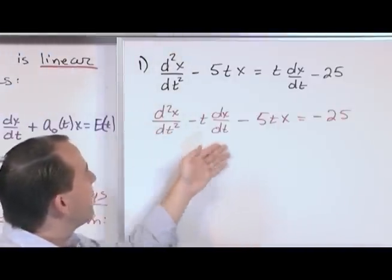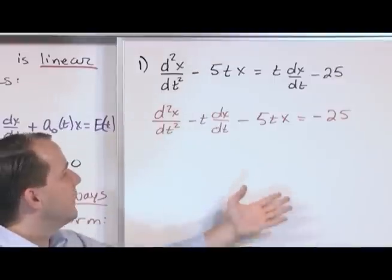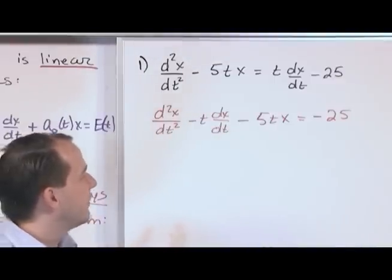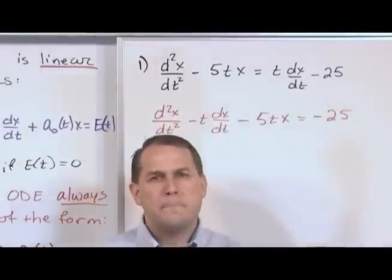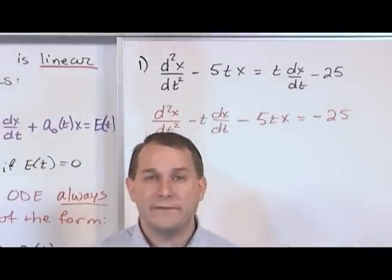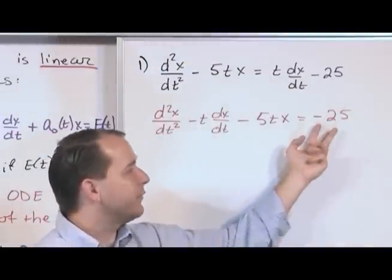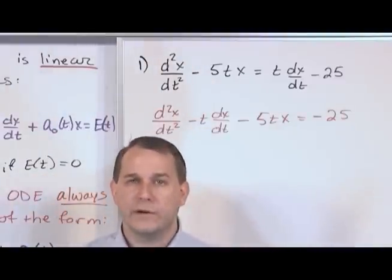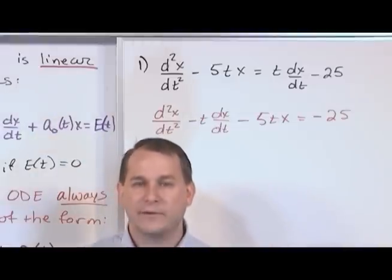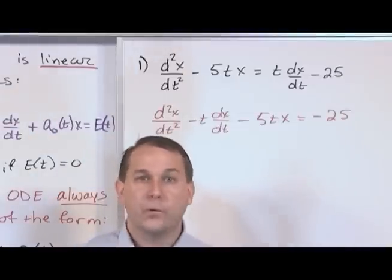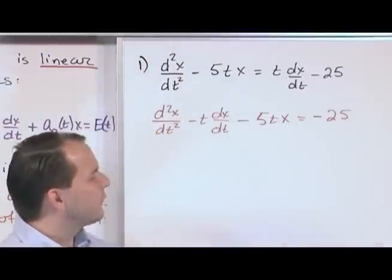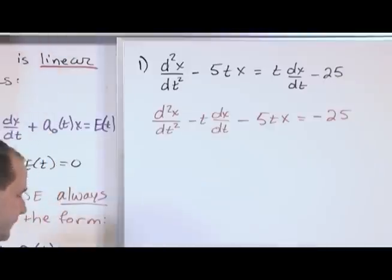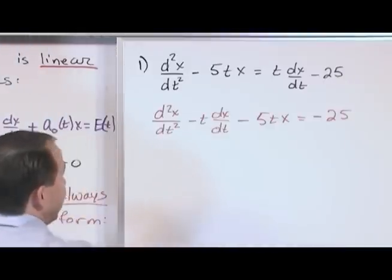So this is my forcing function. If this circuit represented, let's say, an electric circuit, if this differential equation represented an electric circuit, this e of t might be the voltage. Maybe I have a 25-volt battery hooked up backwards or something, so it's negative, hooked up to my circuit, a constant 25 volts. Or maybe it's 25 amps going through the circuit as sort of my forcing function. So that's what that is over there. So this guy's linear. It's sort of the bottom line because it matches up, so it's linear.